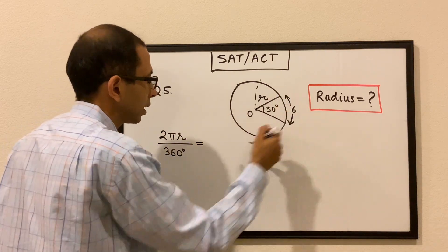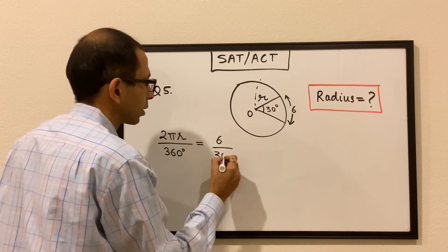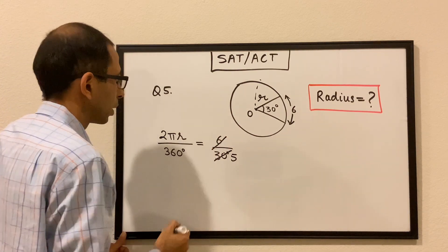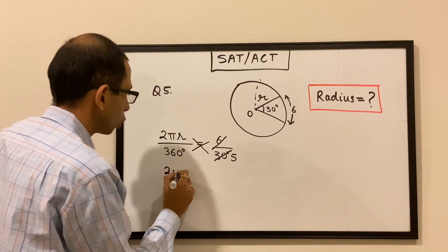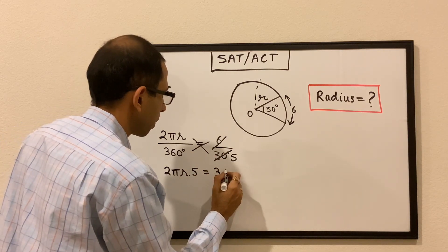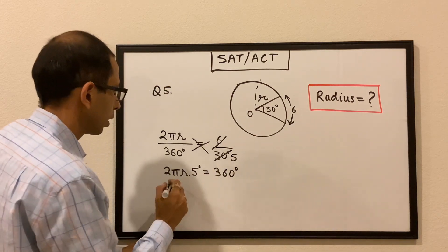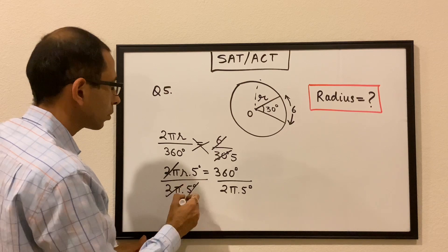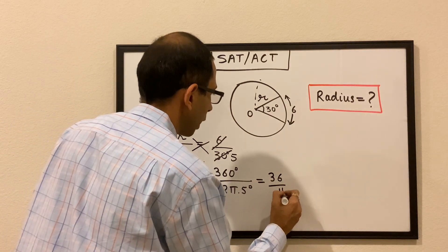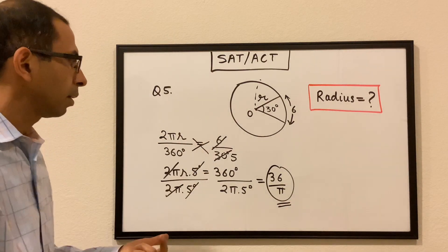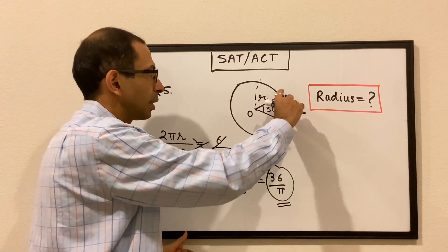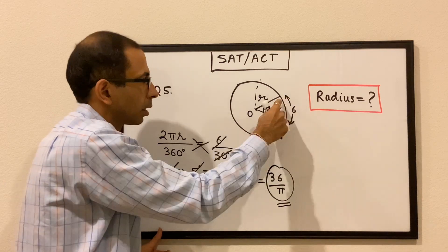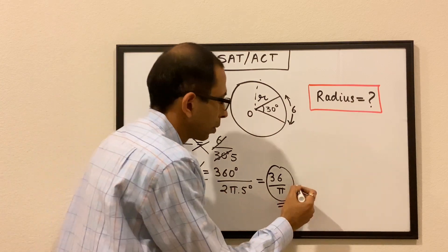If the radius is r, the circumference is 2πr. So 2πr / 360° = 6 / 30°. Simplifying: 2πr / 360 = 6/30, which reduces to 2πr/360 = 1/5. Cross-multiplying: 2πr × 5 = 360, so r = 360 / (2π × 5) = 36/π. The radius of the circle is 36/π.